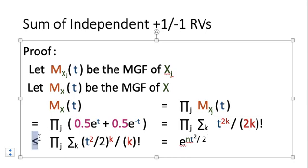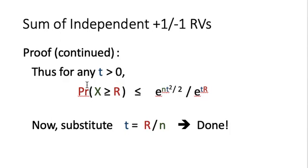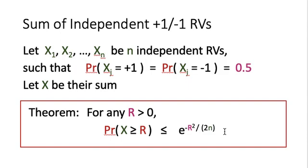Now we have the MGF for x and are ready to get the Chernoff bounds. For any t greater than 0, the probability that x is greater than or equal to r is less than or equal to the MGF divided by e^{tr}, and the MGF itself is bounded by e^{nt²/2}. So the probability of x ≥ r is at most e^{nt²/2 - tr}. This bound holds for any t, so we minimize the right-hand side by setting t = r/n, which gives the result e^{-r²/(2n)}.